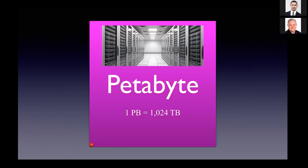One more step: a petabyte. When you see this square, the bottom left corner is a single yellow pixel — that's the gigabyte, the size of a movie. A terabyte is that small red square, so that's 1,000 movies. This purple square — this petabyte — is how we measure data warehouses. It is 1,000 times larger than a terabyte and is equivalent to about 1 million movies or 1 million DVDs in size.